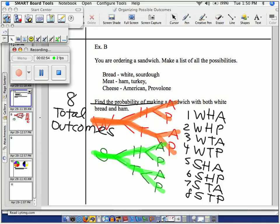But in the question, it says, what about sandwiches that have white bread and ham in it? ¿Dónde está white bread and ham? One, two. So there are two sandwiches that have the desired outcome.